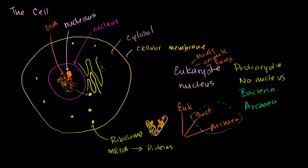The endoplasmic reticulum can be viewed as a bunch of tunnels. It eventually leads to something called Golgi bodies, named after Mr. Golgi himself. I'll do the endoplasmic reticulum in yellow and the Golgi bodies in green—let me tell you in a second what they are.